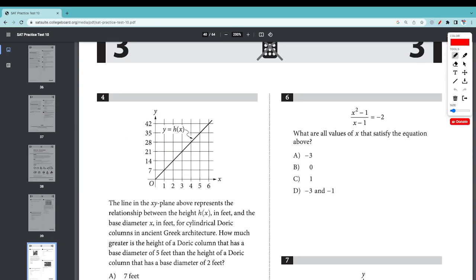What are all the values of x that satisfy the equation above? x squared minus 1 is nothing but x minus 1 times x plus 1. If you divide, we're just left with x plus 1, which equals negative 2. If x plus 1 equals negative 2, then subtract 1, we get x equals negative 3. So 6 is D.